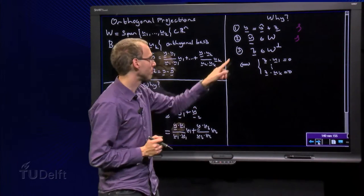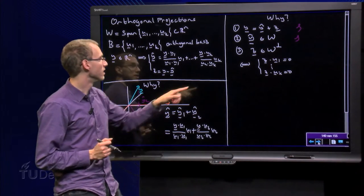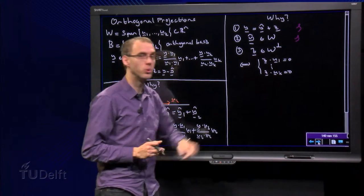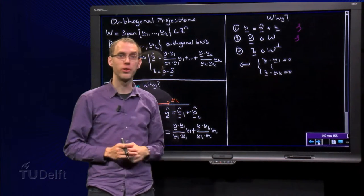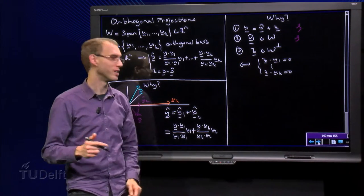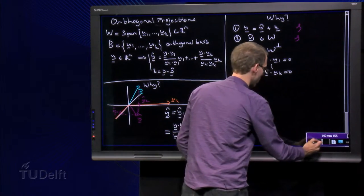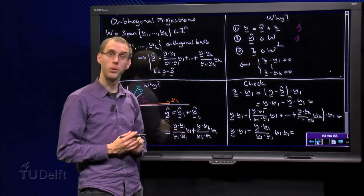The third one is a bit more tricky. Z has to be in w-perp. That means that Z has to be orthogonal to u1 to uk. So we have to check that all those inner products are zero. Let's do it for u1. It goes the same for all the other ones. So we want to check z inner product u1. What do we get?